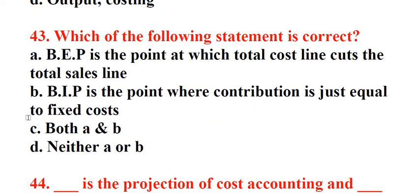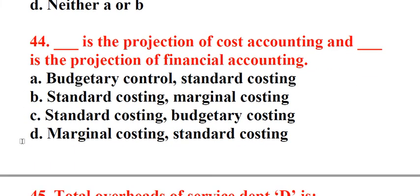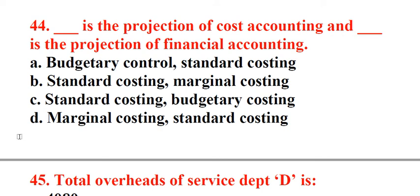Question 43: Which of the following statement is correct? A. BEP is the point at which total cost line cuts the total sales line, B. BEP is the point where contribution is just equal to fixed costs, C. Both A and B, D. Neither A or B. Answer: C. Both A and B. Question 44: Underscore is the projection of cost accounting and underscore is the projection of financial accounting. A. Budgetary control, standard costing, B. Standard costing, marginal costing, C. Standard costing, budgetary costing, D. Marginal costing, standard costing. Answer: B. Standard costing, marginal costing.